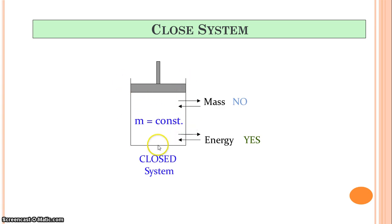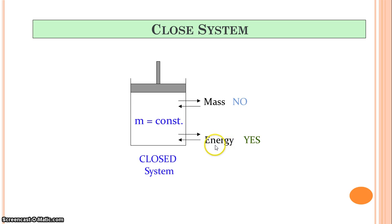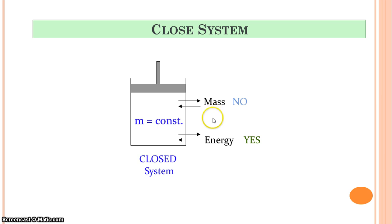Let's say you have a cylinder with a piston and gas inside it. If there is no mass transfer but only energy transfer, that is a closed system. Closed systems are those in which there is only energy interaction but no mass transfer. A very good example is the sun — there is energy interaction from the sun but no mass transfer, so the sun is an example of a closed system.